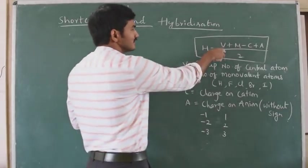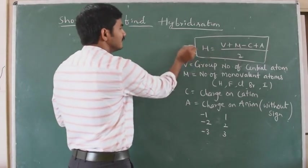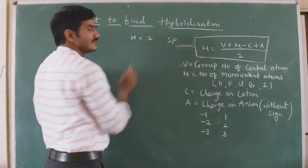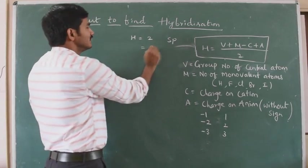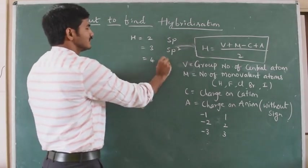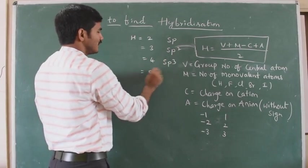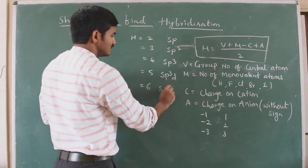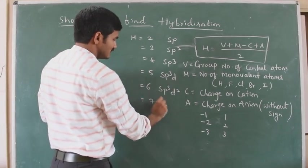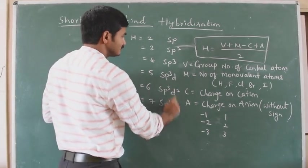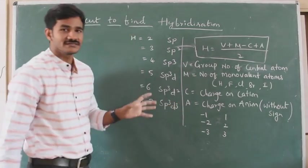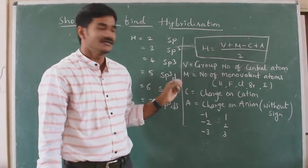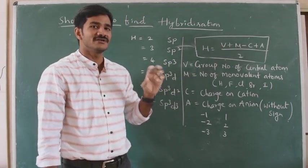After substituting all these values, we get one number — that is the H value. If H equals 2, it is SP hybridization; 3 is SP2; 4 is SP3; 5 is SP3D; 6 is SP3D2; 7 is SP3D3. This is the simple formula. Without the concept of hybridization, we can find out the hybridization of a given molecule.